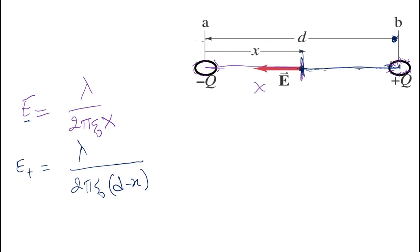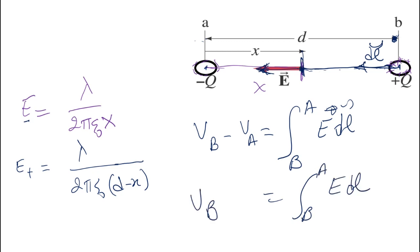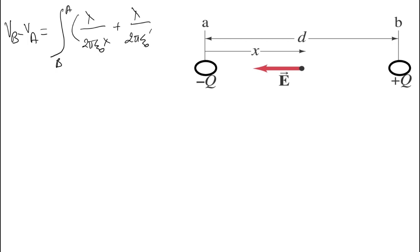Now we need to find the electric potential between points B and A. By definition, VB minus VA equals the integral from B to A of E dL. Since the displacement and all electric fields from the two wires point in the same direction, E · dL equals E dL. Substituting the fields, the potential difference is the integral of [λ/(2π ε₀ X) + λ/(2π ε₀ (D − X))] dX.